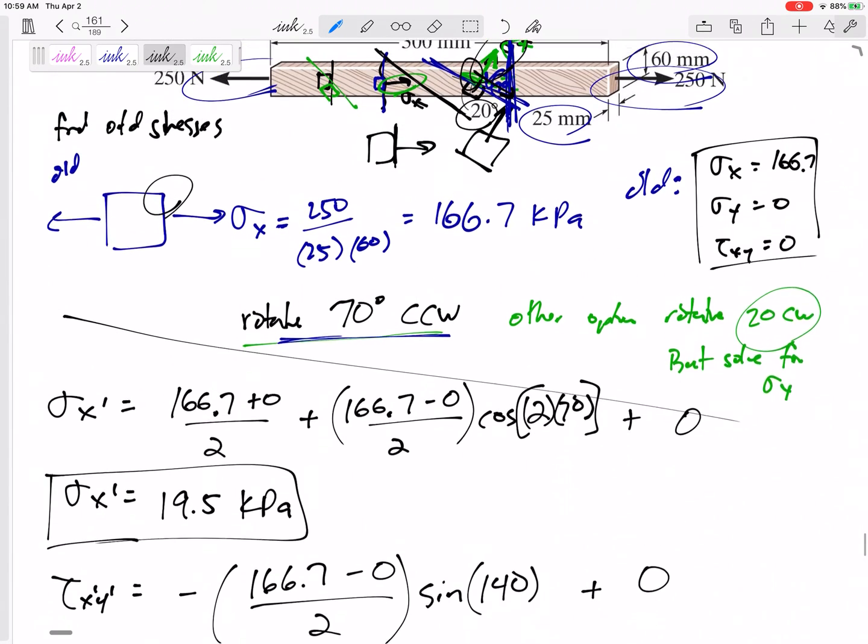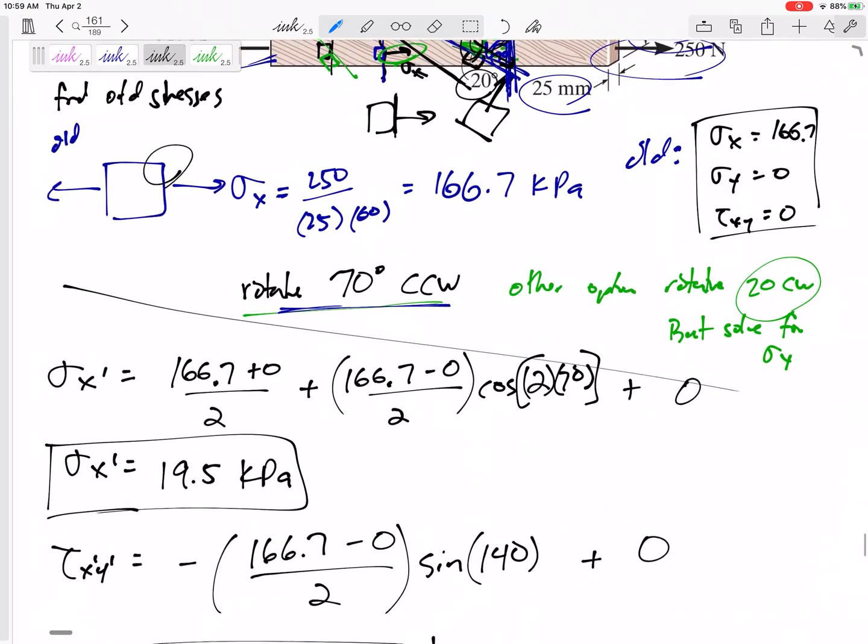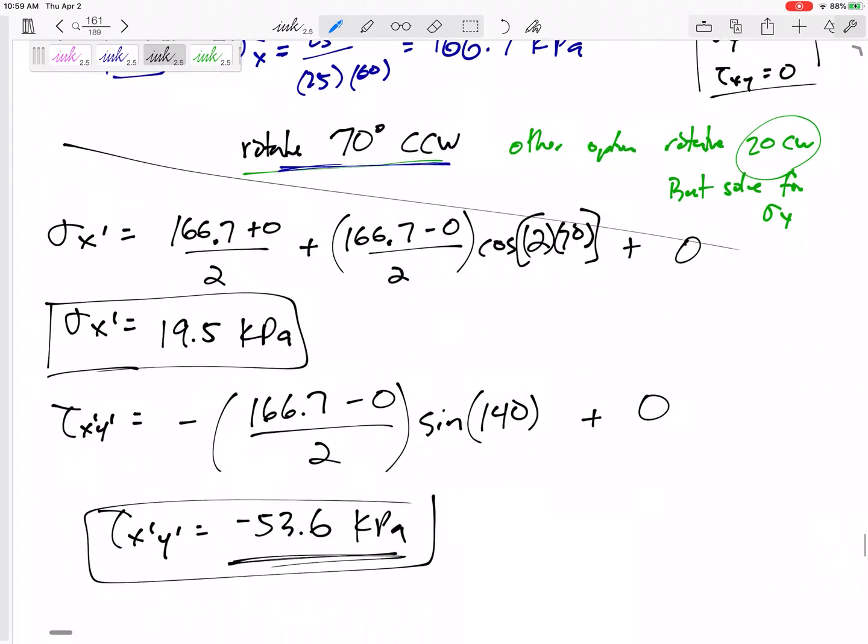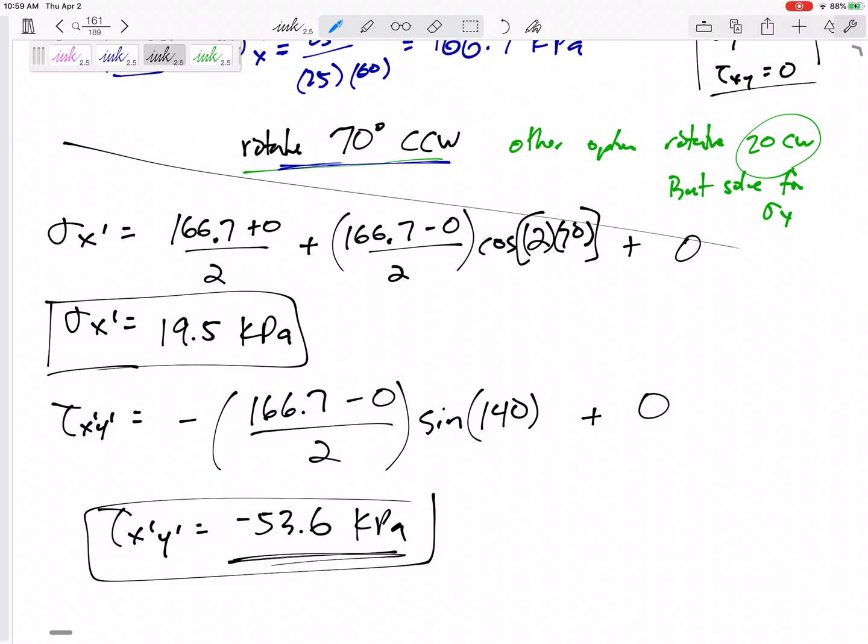We had an old way of cutting it. Our new way is, just find the stresses at the usual orientation, and then use the stress transformation to orient them at 70 degrees, or orient them along the grain. And find what are the stresses along the grain? So I kind of need to worry about, hey, this shear stress along the grain is going to be 53.6 kPa. Can it withstand that in that direction?